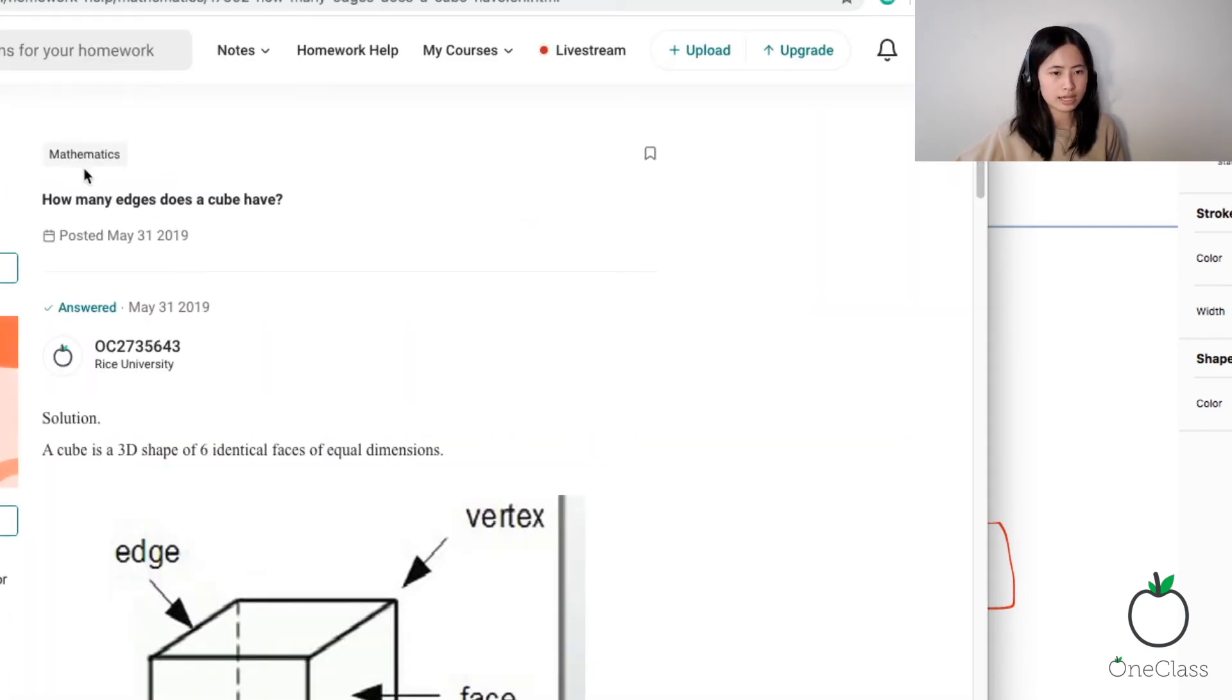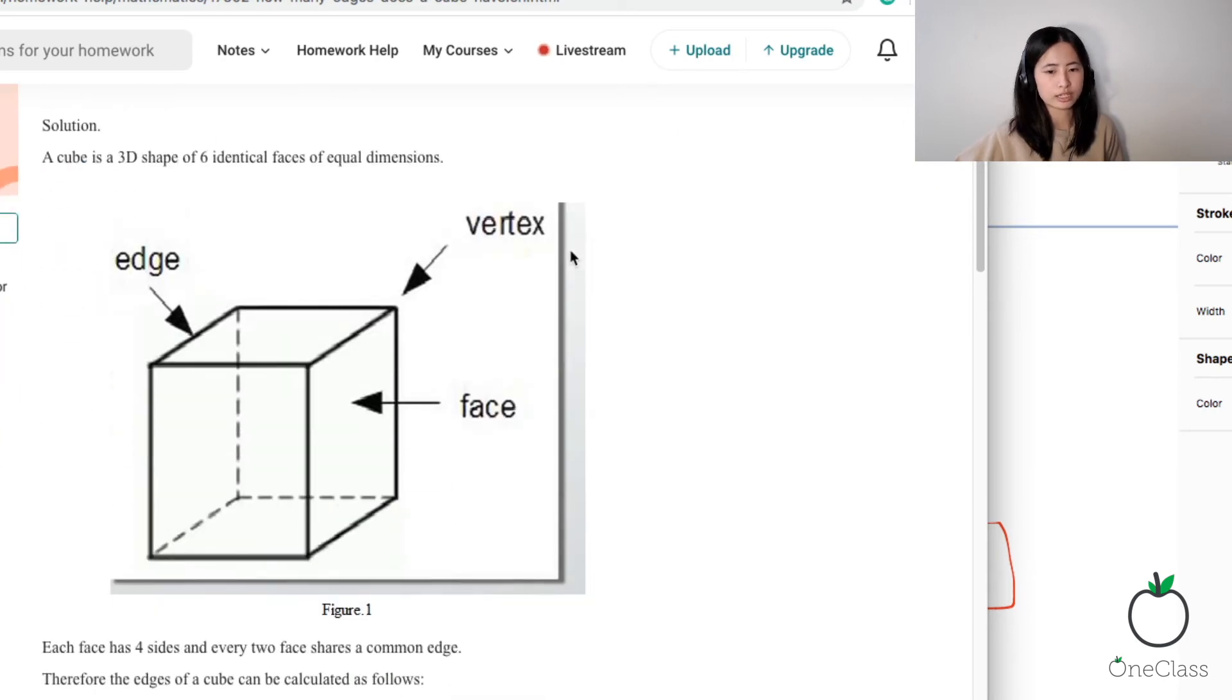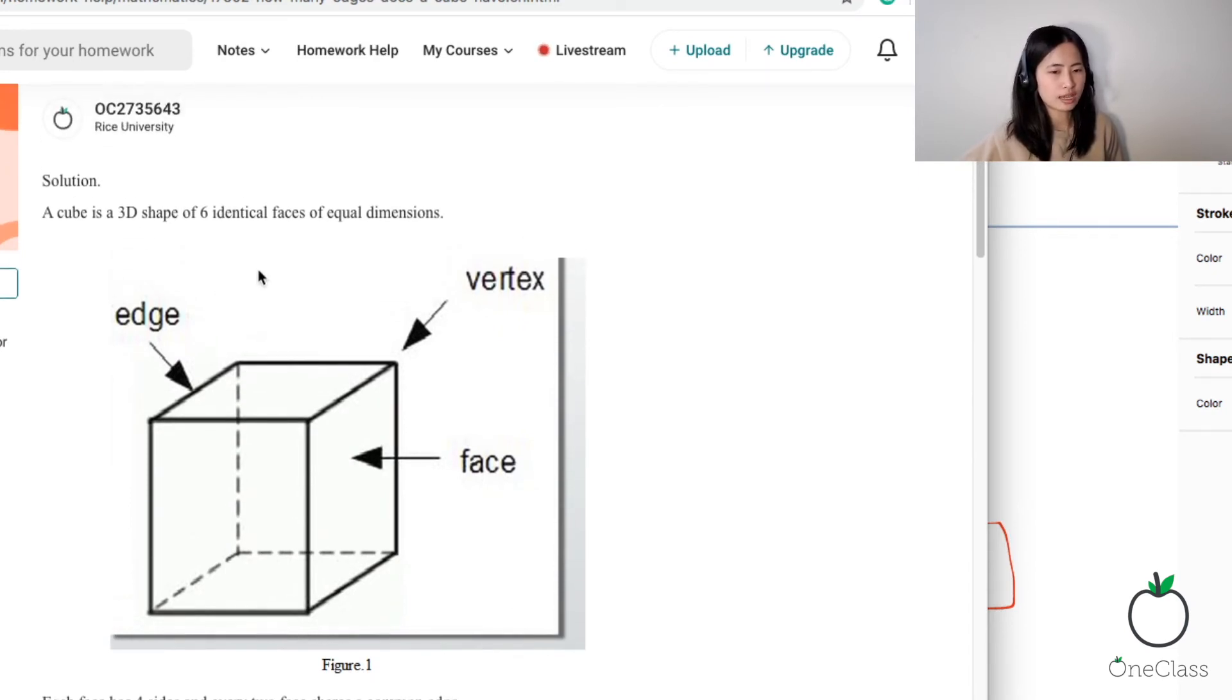Okay, so this question is asking how many edges does a cube have? And yeah, amazing. So they actually gave us a figure which we can use. So as you can see, if we have a cube, I think probably everyone knows what a cube is and how it looks like by now.